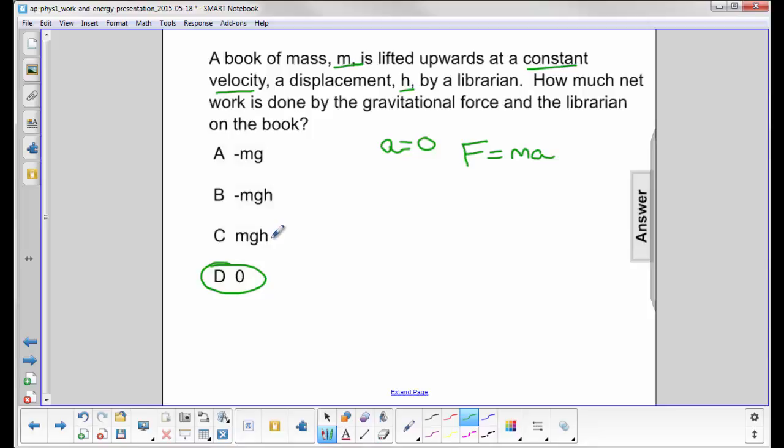So mgh is the work done by the librarian. Since it's moving opposite the gravitational force, the gravitational force does work of negative mgh. There's another way to look at the problem: you add those two works together and you get zero.